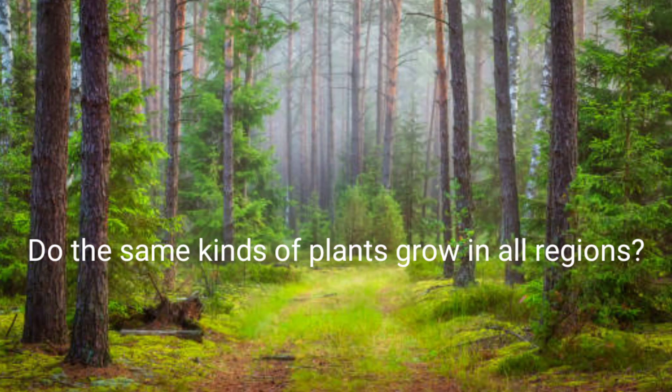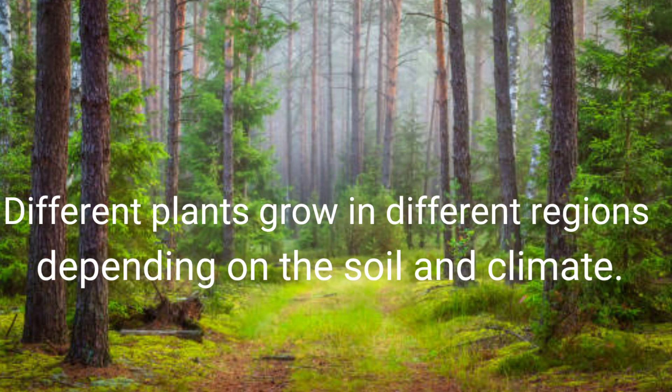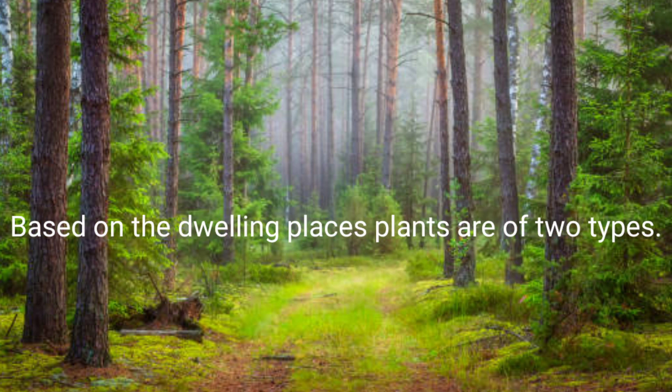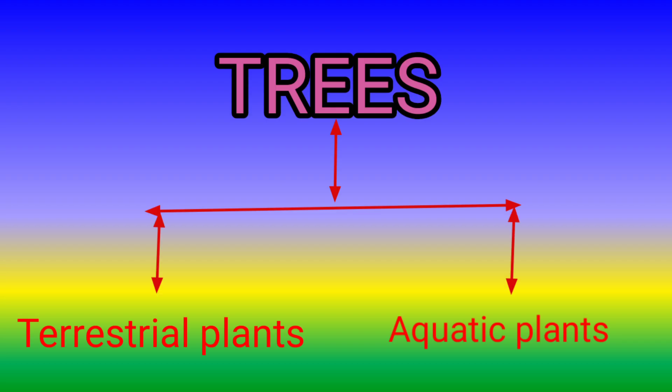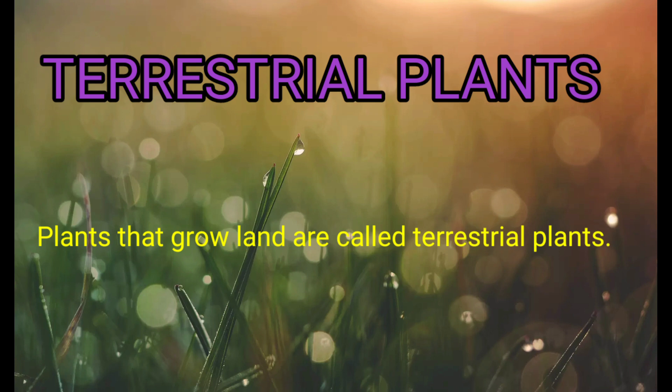Do the same kinds of plants grow in all regions? Different plants grow in different regions depending on the soil and climate. Based on their dwelling places, plants are of two types: terrestrial plants and aquatic plants.